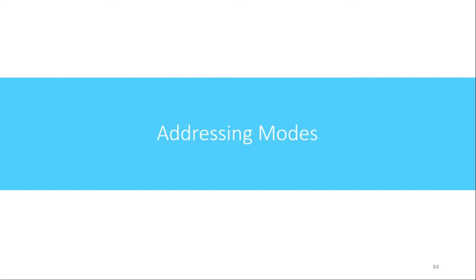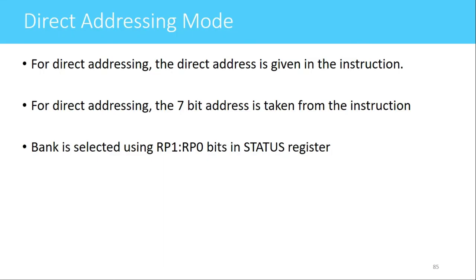Welcome. In this video, we will see the addressing modes present in PIC16F877 microcontroller. The addressing mode is the way by which the operands are accessed. There are three addressing modes available in PIC16F877. The first one is direct addressing mode. In this mode, the direct address is given in the instruction itself. That direct address can be an address of a RAM memory location or it can be any SFR.